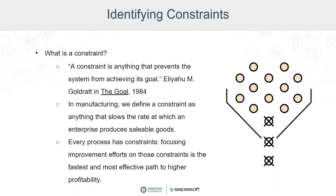Imagine your bottleneck is your palletizer. Can you augment your palletizer with another one in parallel? Can you run the palletizer operator crew in shifts, ensuring the machine never stops running? Can you improve flow into or out of that palletizer such that it can always process its load more efficiently? The theory of constraints asks us to think this way about your plants. Every process has constraints, and focusing improvement efforts on those constraints is the fastest and most effective path to higher profitability.